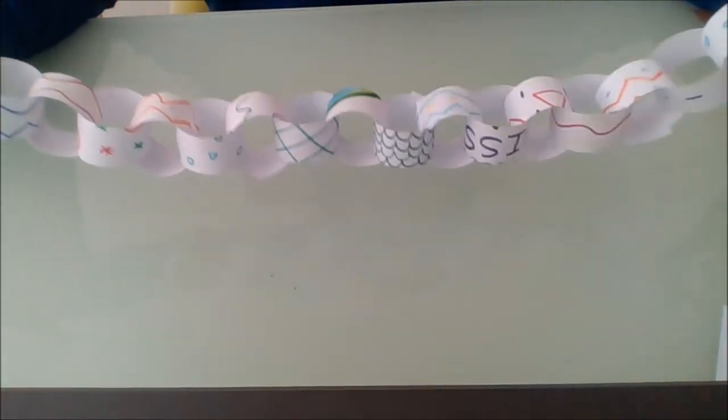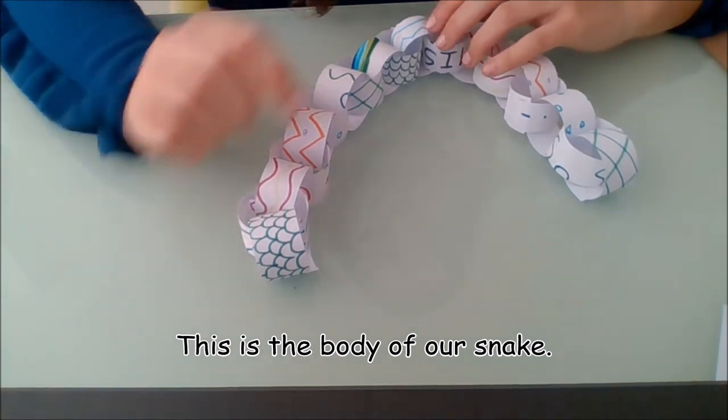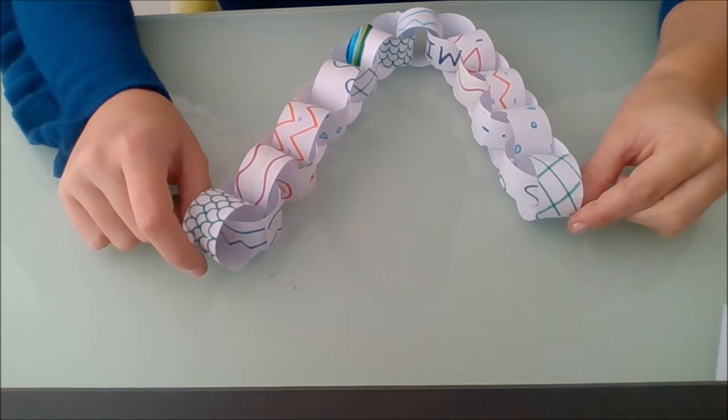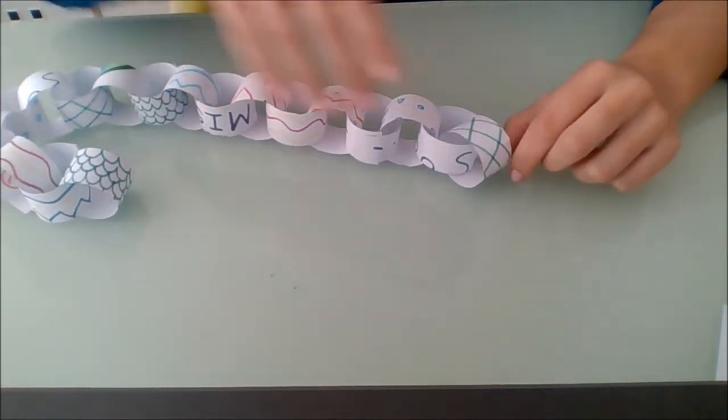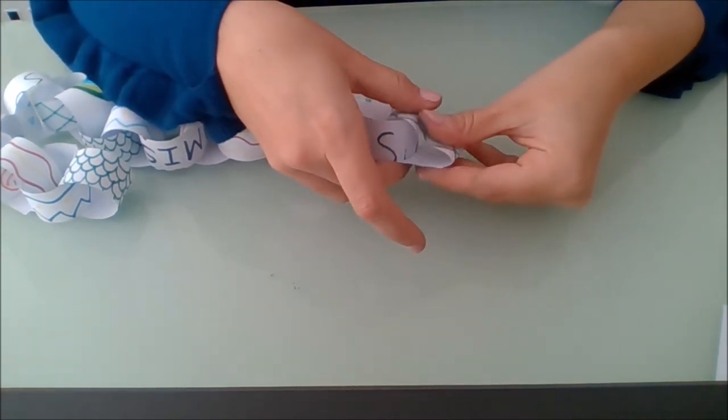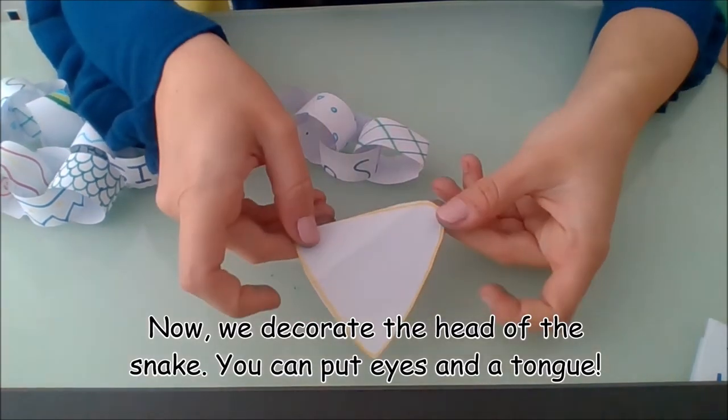Perfect, so now we have the body of our snake. What do we have to do now? Now we have to choose which side we want it to be the head. I am going to choose this side where I started. What am I going to do? I'm going to flatten it a little bit. I'm going to take the head, the triangle head that we made.